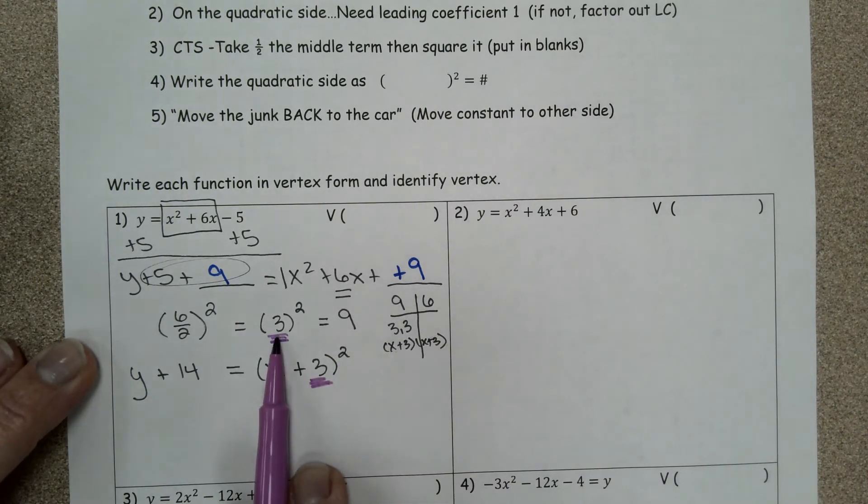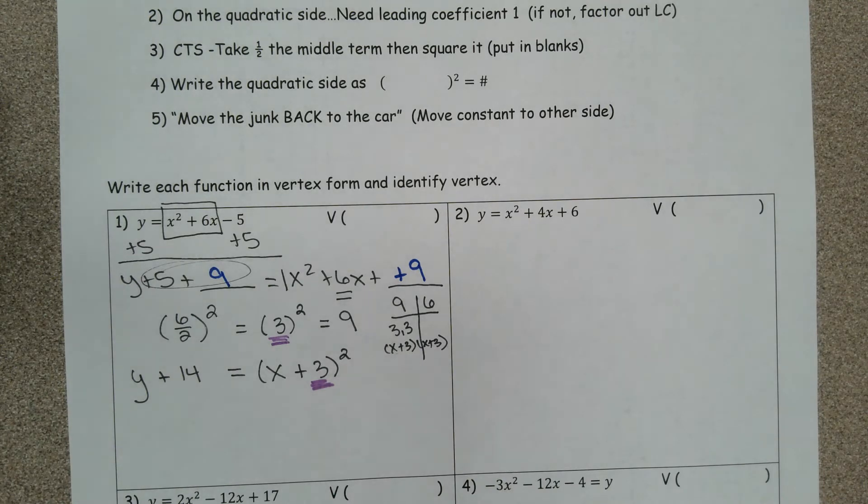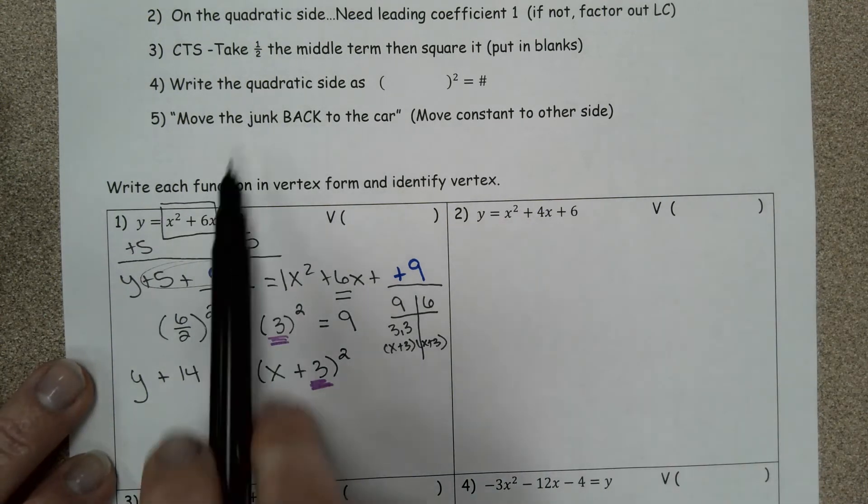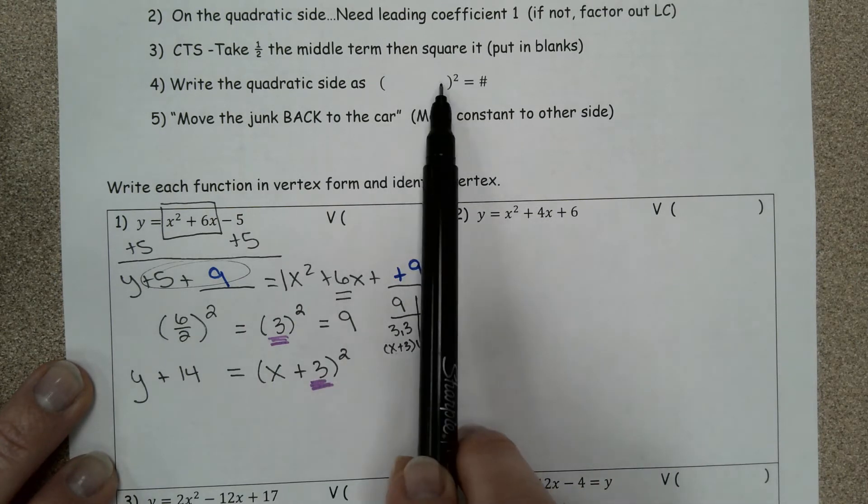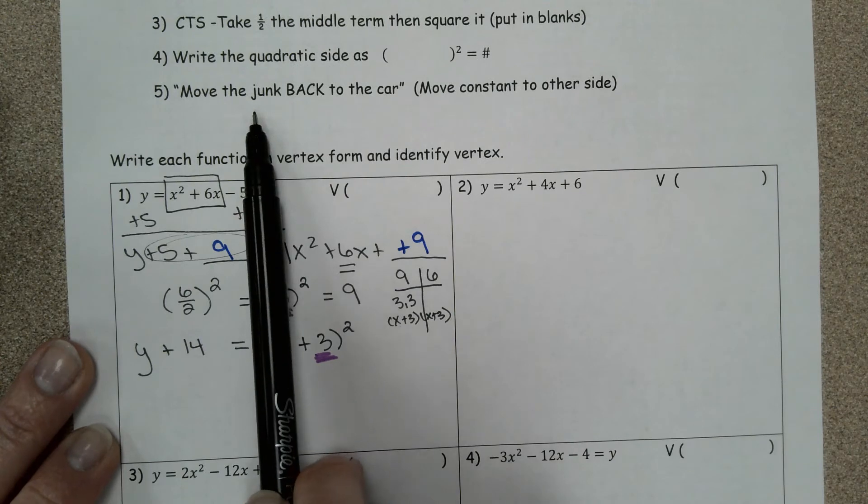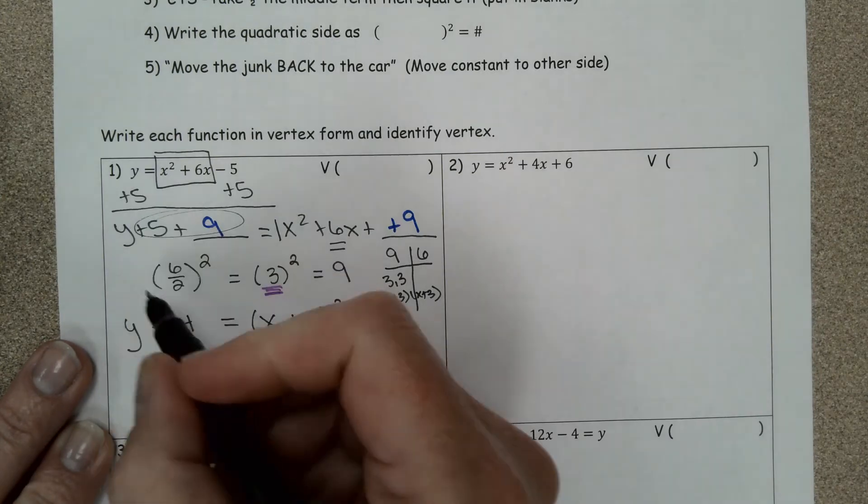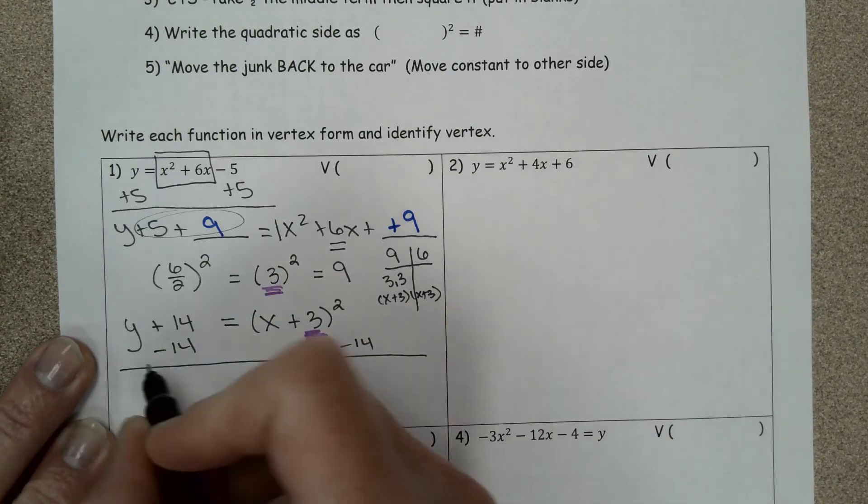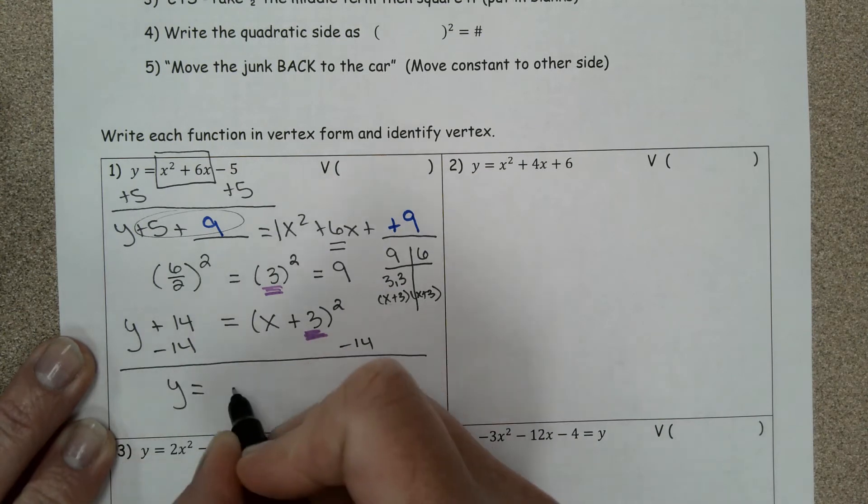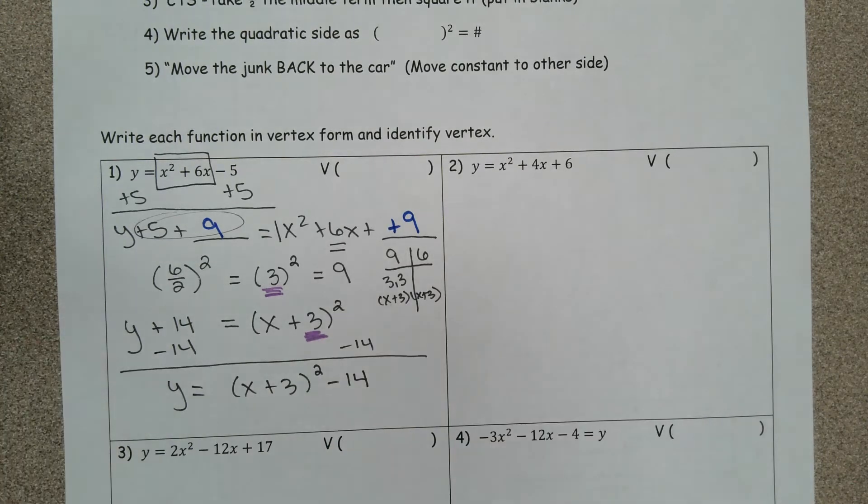Notice whatever number you have here is always going to be the number that goes into the parentheses right there. Step number four, write the quadratic as parentheses squared, done. Move the junk back to the car, that is code for move the constant to the other side. So I'm going to subtract the 14 over to the other side. And finally write this as x plus 3 squared minus 14.